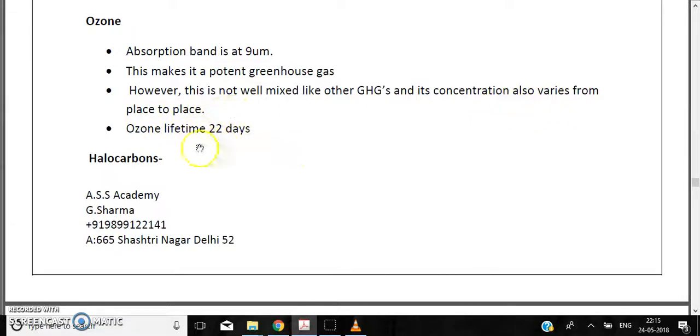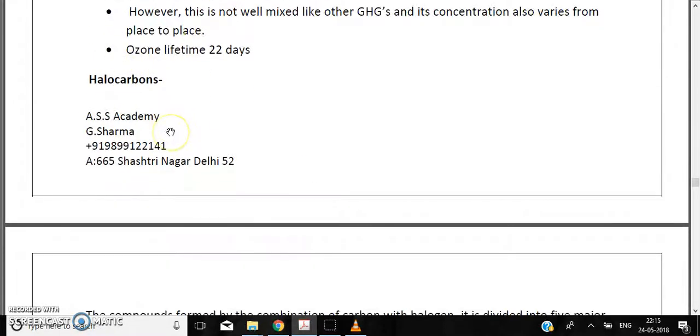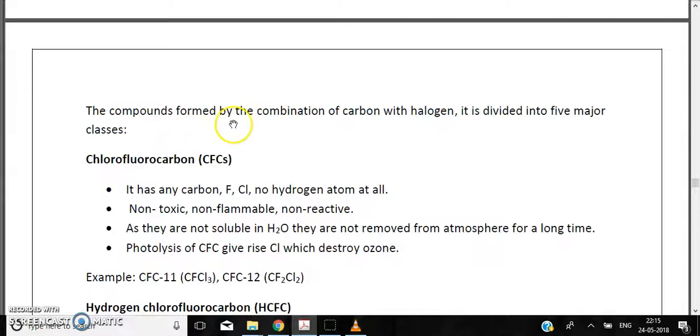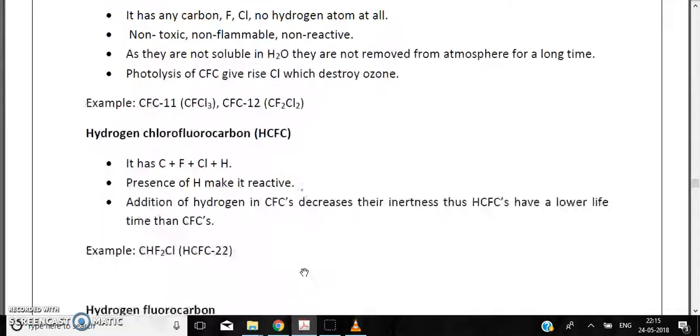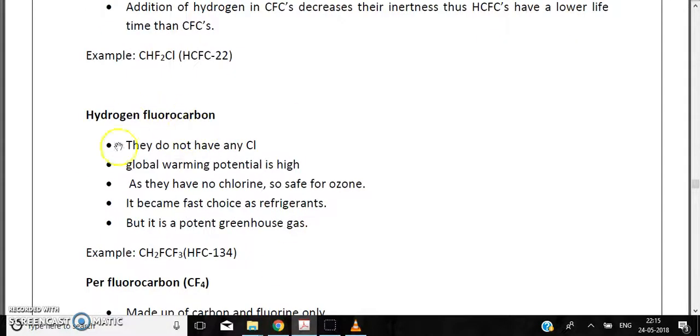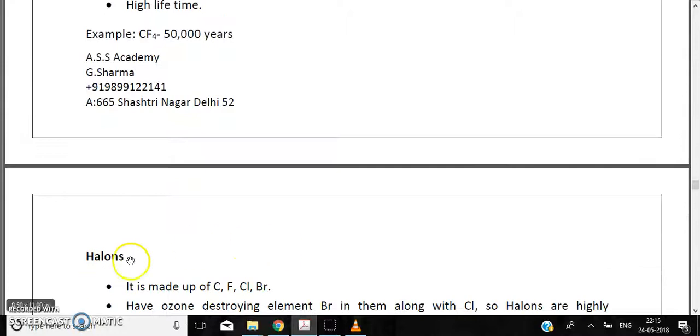Now comes halocarbons. The compounds formed by the combination of carbon and halogen are called halocarbons, and these are divided into five major categories: chlorofluorocarbons (CFCs), hydrochlorofluorocarbons (HCFCs), hydrofluorocarbons (HFCs), perfluorocarbons, and halons. We will be studying these one by one in detail.